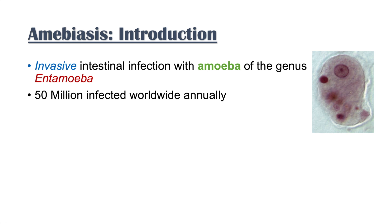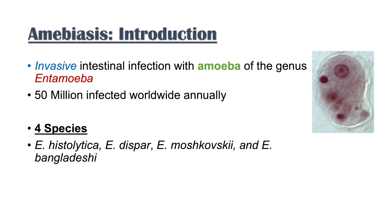It's estimated that about 50 million individuals are infected worldwide annually. There are actually four different species that can cause intestinal amoebiasis: Entamoeba histolytica, Entamoeba dispar, Entamoeba moshkovskii, and Entamoeba bangladeshi. We're going to specifically focus on Entamoeba histolytica because this is the most common cause.